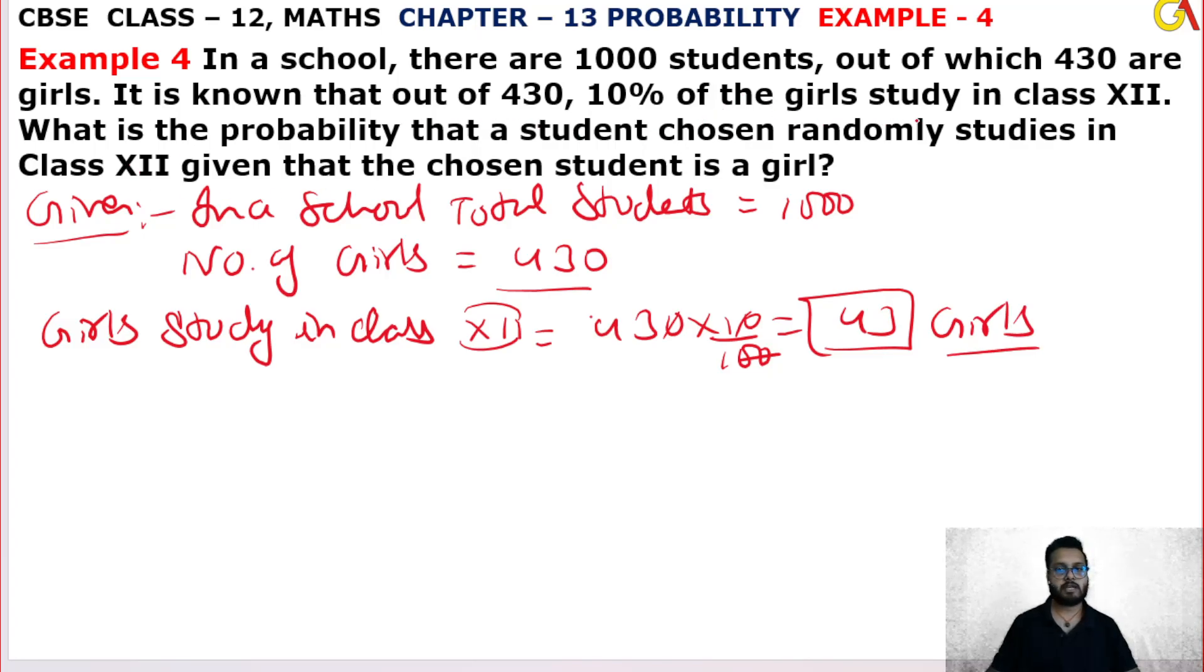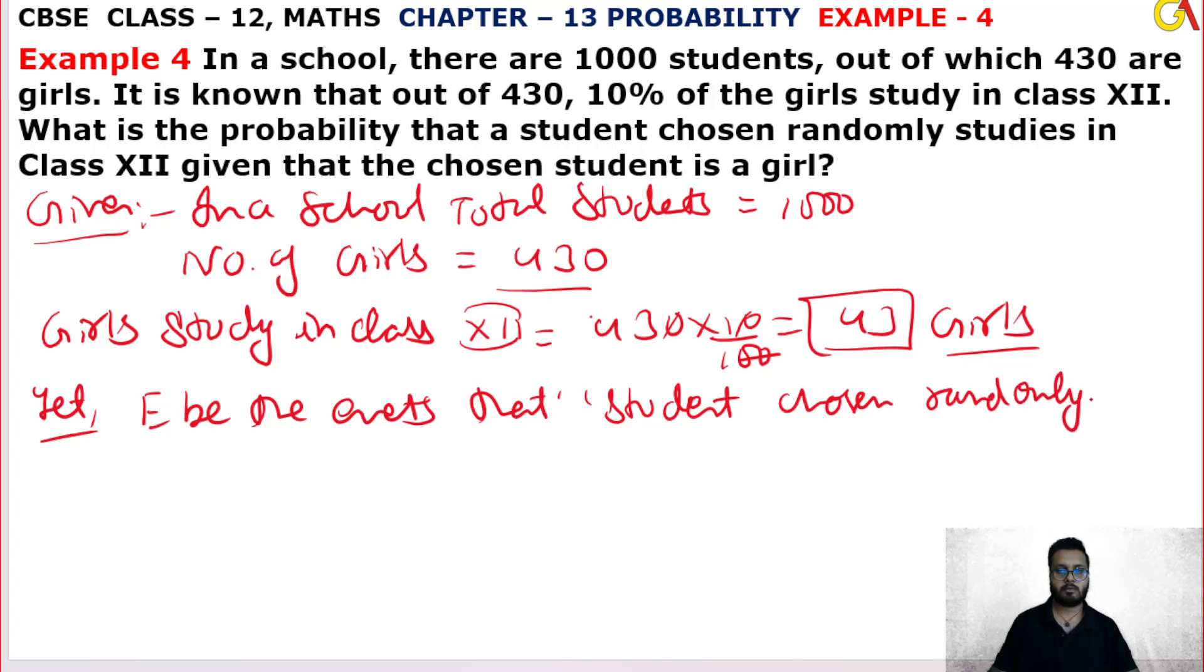What is the probability that a student chosen randomly studies in Class XII? Let E be the event that student chosen randomly studies in Class XII. And F be the event that the chosen student is a girl.